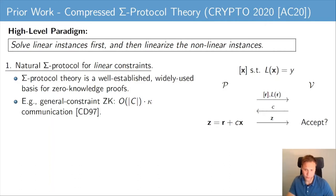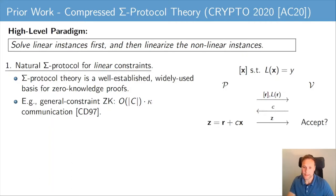Sigma protocol theory is a well-established, widely used basis for zero-knowledge proofs. In particular, we know how to construct general constraint zero-knowledge protocols based on sigma protocols. However, these protocols have a linear communication complexity. In this sigma protocol we can already see where this linear communication complexity comes from: the final response Z is of exactly the same size as the secret input X, so this sigma protocol has communication complexity linear in the size of X.